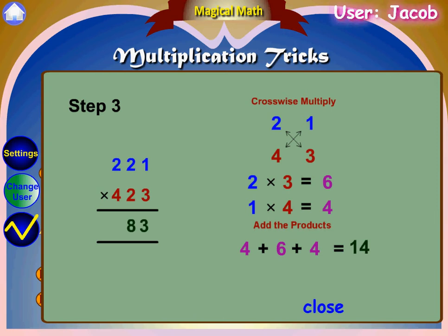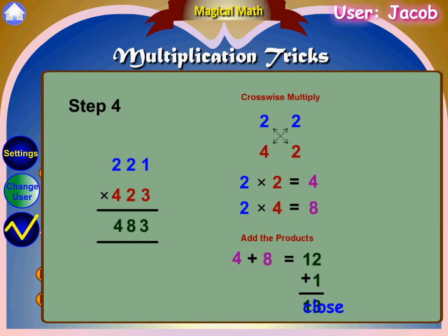Crosswise multiply 2 and 3, and 4 and 1. 2 times 3 equals 6, and 4 times 1 equals 4. Now add all 3 products: 4 plus 6 plus 4 equals 14. In 14, 1 is a carry.